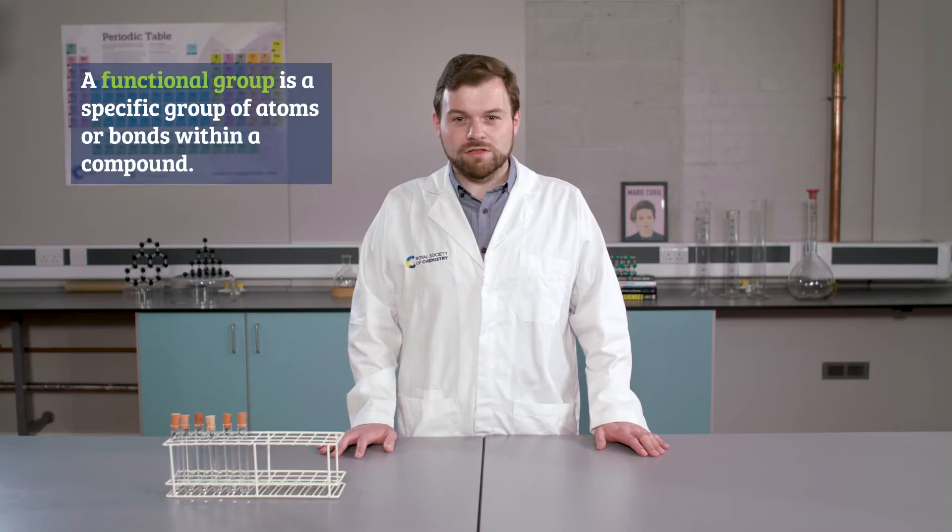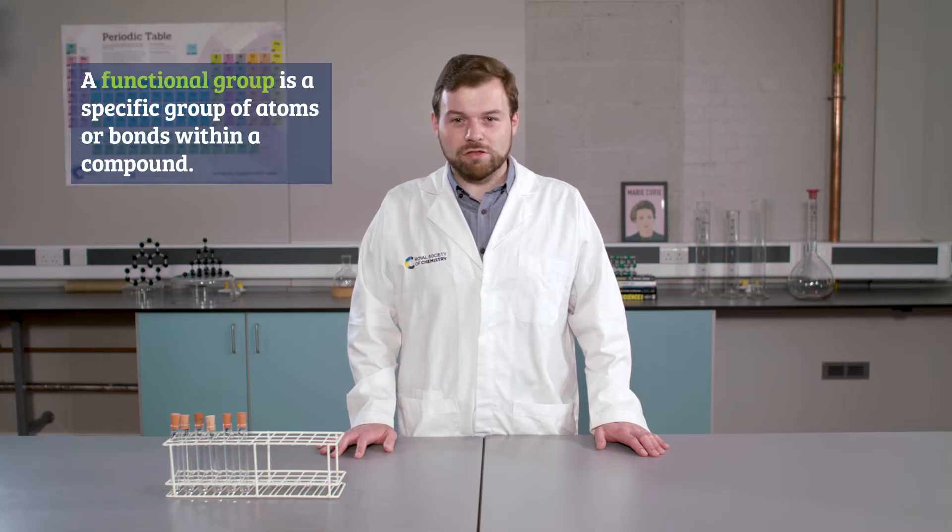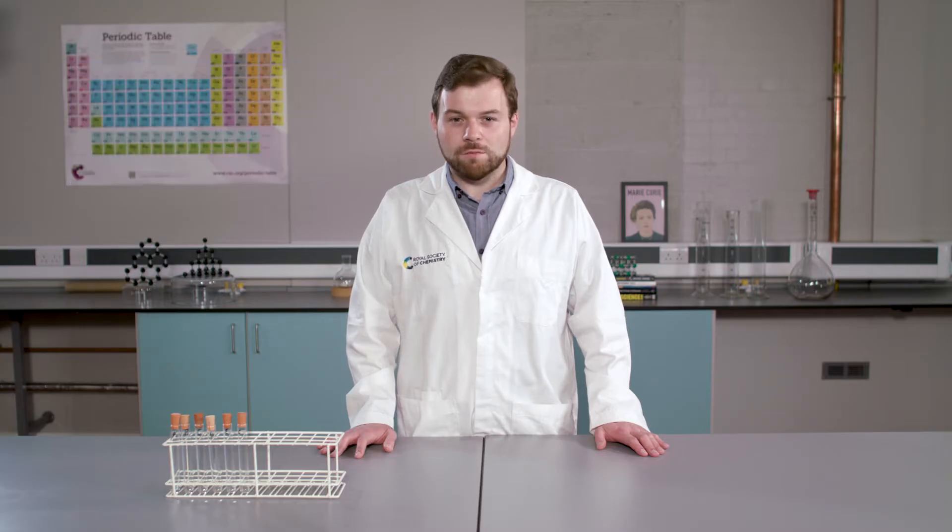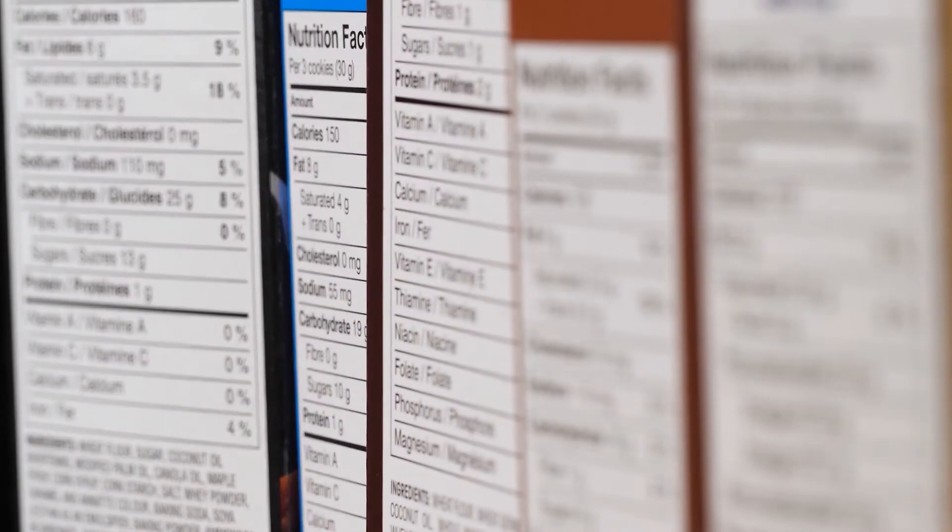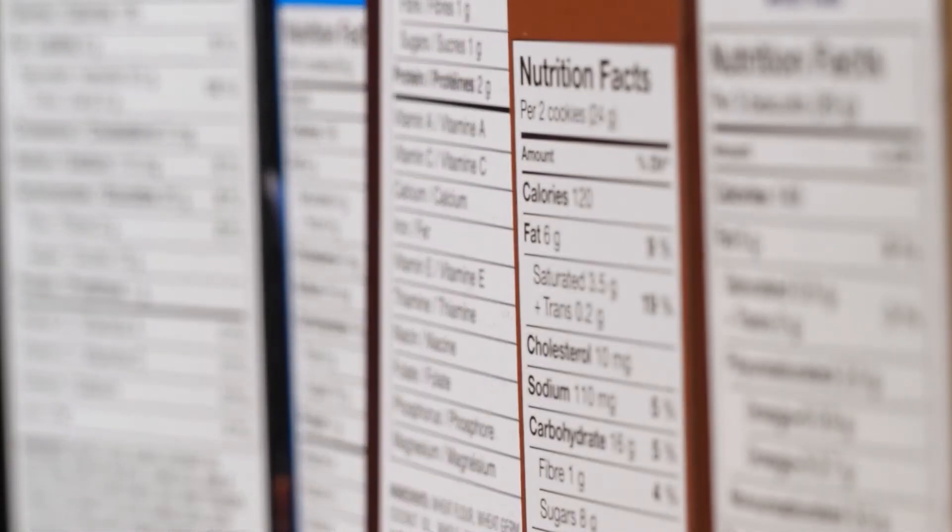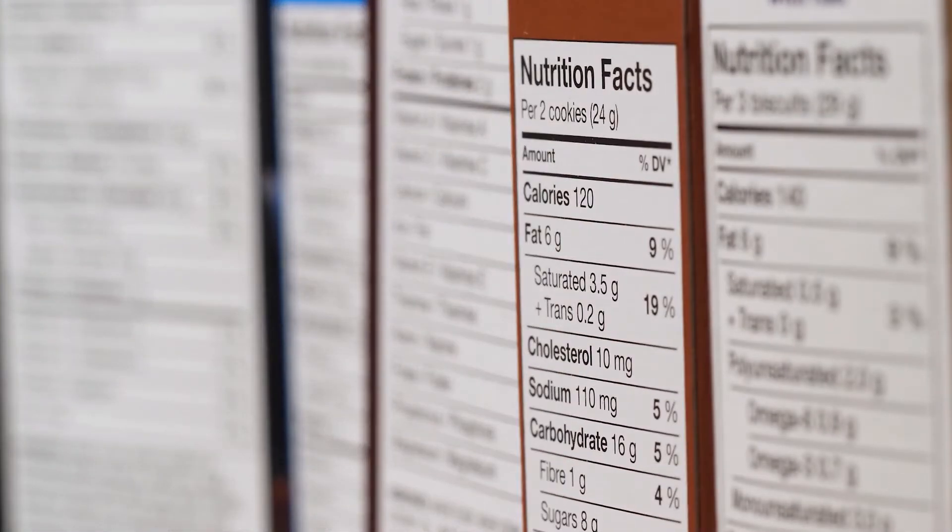Functional groups play a significant role in directing and controlling organic reactions, so chemists need to be able to identify which functional groups are present in a molecule. For example, material scientists may look to add functional groups to a molecule for desired properties, whilst food scientists may look to replace saturated fats with alternative unsaturated fats, molecules containing carbon-carbon double bonds in their products.